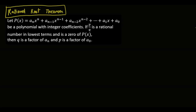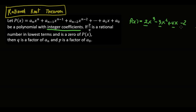I want to point out several things that are important in the proof we will do. The first one is that the coefficients of your polynomial need to be integers. For instance, if you have a polynomial function f, it should be something like 2x cubed minus 3x squared plus 4x minus 2 — all coefficients are integers. This is one of the most important requirements; fractions are not allowed. If there are fractions, we need to convert them to integers first. The Rational Root Theorem works when the coefficients are integers.